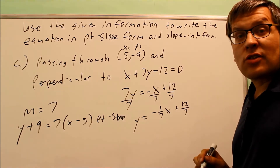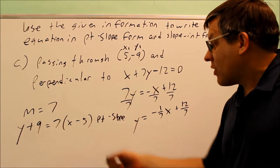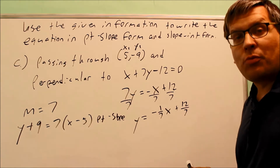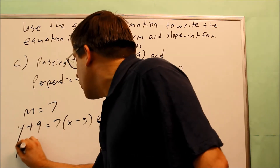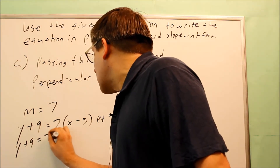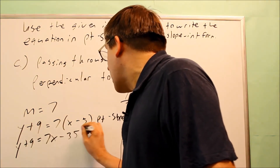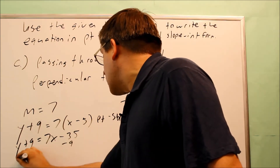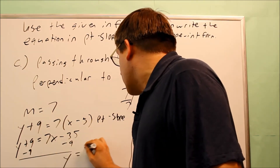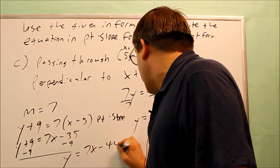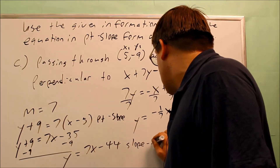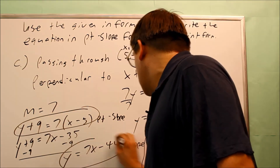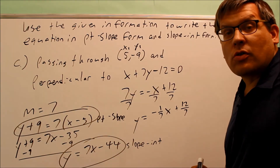That's the first answer they're looking for, but we keep going to get slope-intercept form. Distributing the 7 gives 7x minus 35, and subtracting 9 from both sides gives y equals 7x minus 44. That is the slope-intercept form. So the two answers are: point-slope form and slope-intercept form.